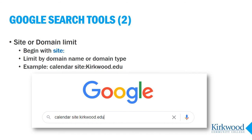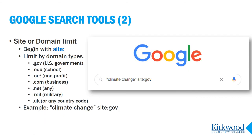This search on the screen would search for the word "calendar," but only on pages with kirkwood.edu in the URL. Another way to use this site limit is to limit your search to a specific domain type. The domain type is indicated at the end of the domain name.